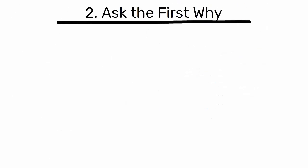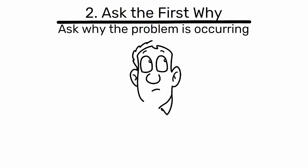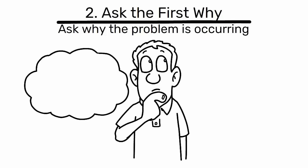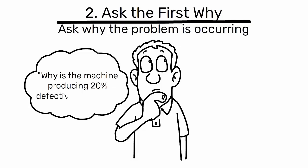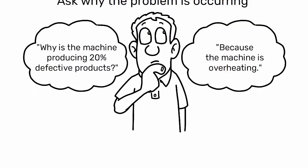Step 2: Ask the first why. Ask why the problem is occurring. For instance, why is the machine producing 20% defective products? The answer might be because the machine is overheating.